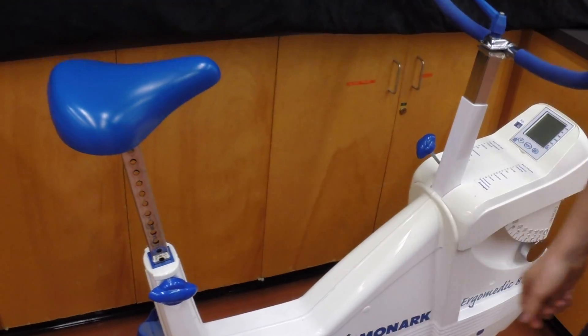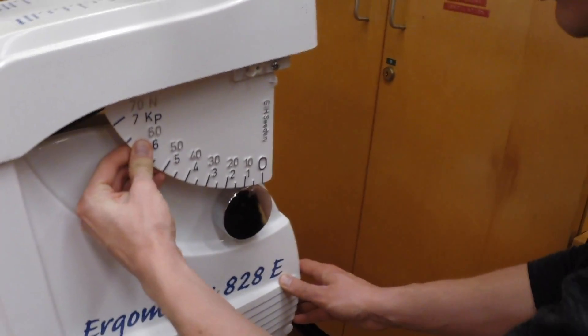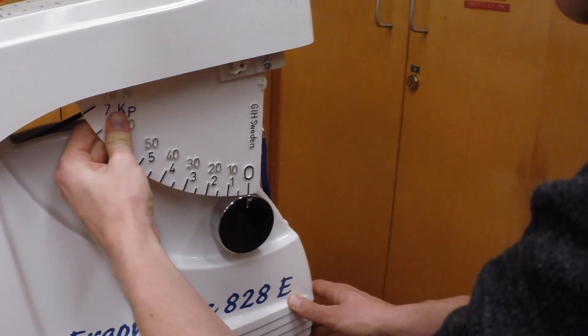Next, calibrate the cycle ergometer. Make sure the client's feet are off the pedals, and adjust the gauge so that the marks both line up at zero.